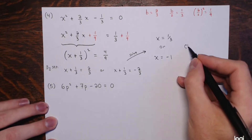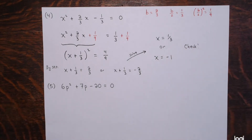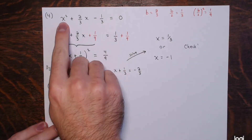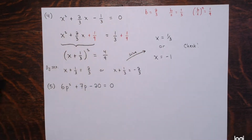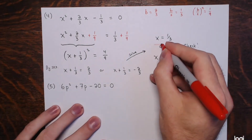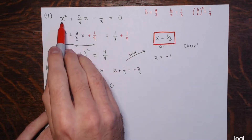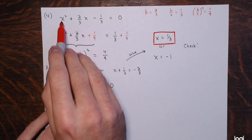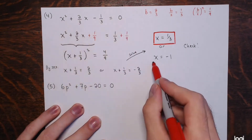These are easier to check since there are no radicals. When x = 1/3: (1/3)² + (2/3)(1/3) - 1/3 = 1/9 + 2/9 - 3/9 = 0. ✓ When x = -1: (-1)² + (2/3)(-1) - 1/3 = 1 - 2/3 - 1/3 = 1 - 1 = 0. ✓ Both solutions work.